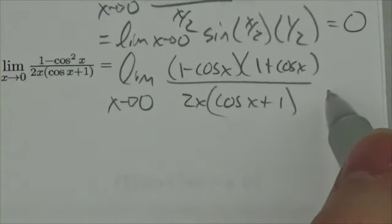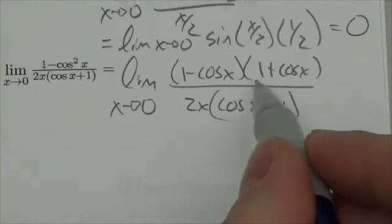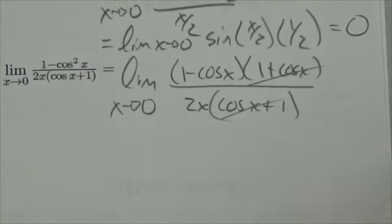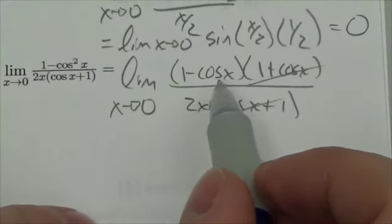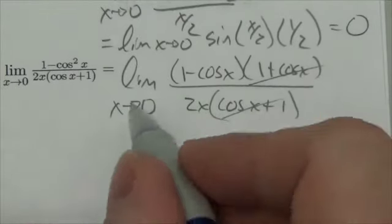Now because order doesn't really matter with addition, I know that 1 plus cos x divided by cos x plus 1 will go to 1. And then I'm left with 1 minus cosine of x over 2x.